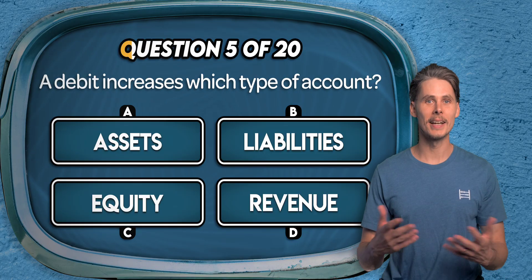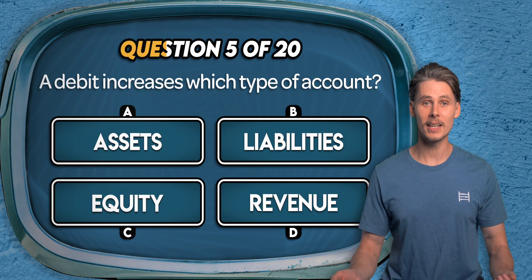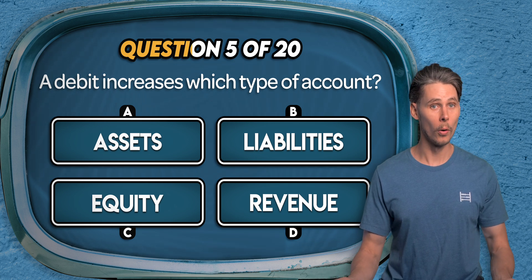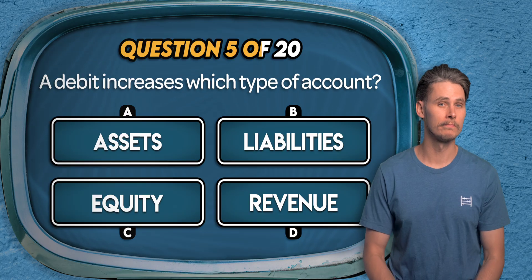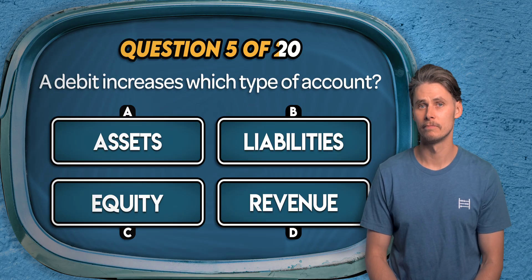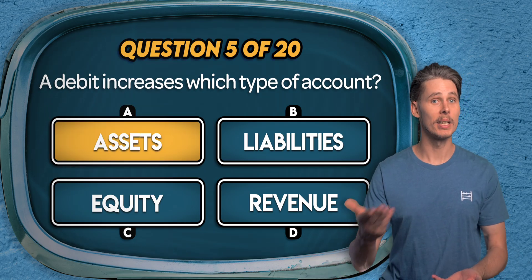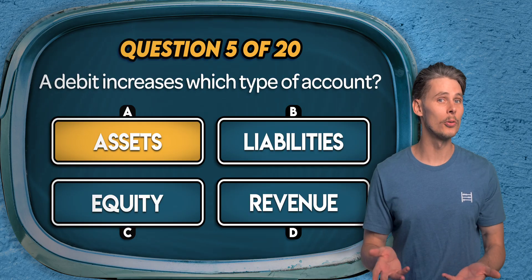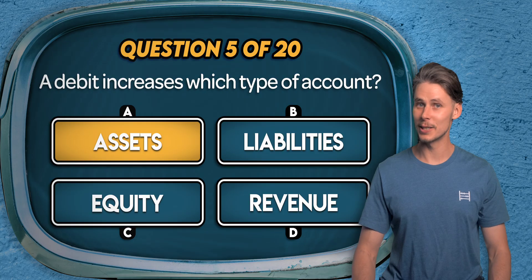Question 5. A debit increases the balance of which type of account? Assets, liabilities, equity, or revenue? The answer is A. Assets are represented by the A in DEALER. This means they're normal debit accounts, so debits increase them and credits decrease them.